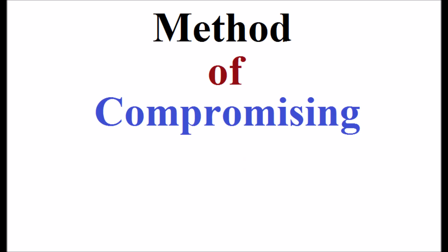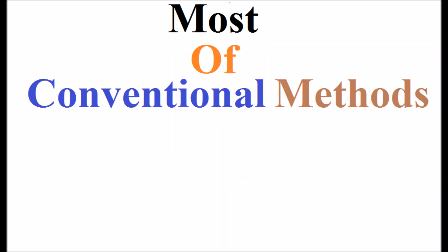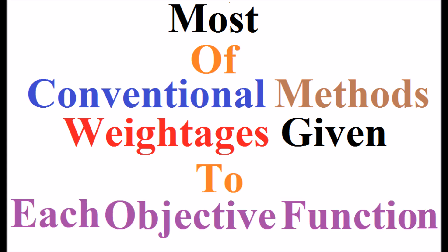The method of compromising is the multi-objective optimization. Most of the conventional methods, weightages are given to each objective function. Finding these weightages is the best solution for multi-objective optimization.